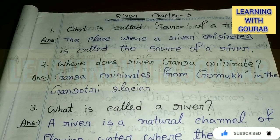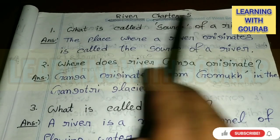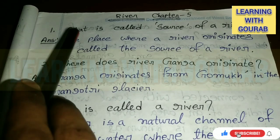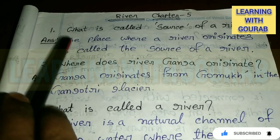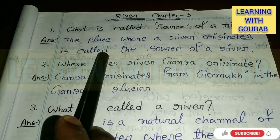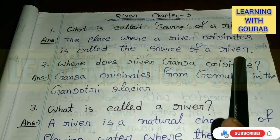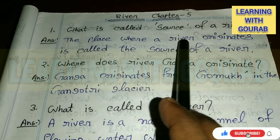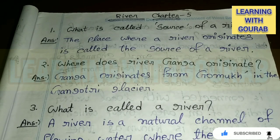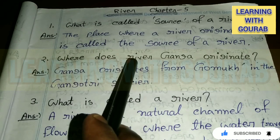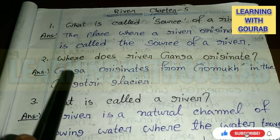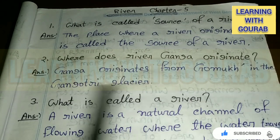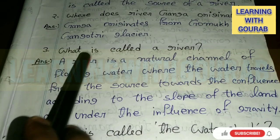Class 7 English medium Geography Chapter 5 River. First question: What is called the source of a river? Answer: The place where a river originates is called the source of a river.